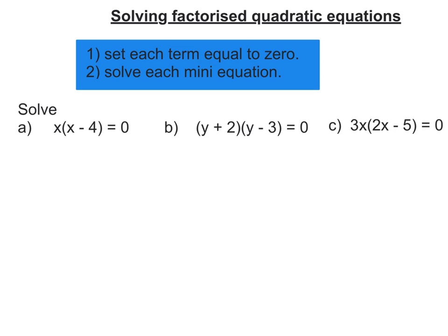So when you've got two terms multiplied together to give 0, one of them at least must be 0. So the first step we need to do is to separate each term and make them equal to 0. So either x is going to be 0 or x minus 4 is equal to 0.